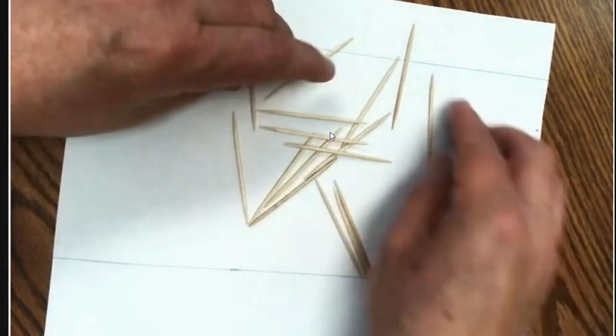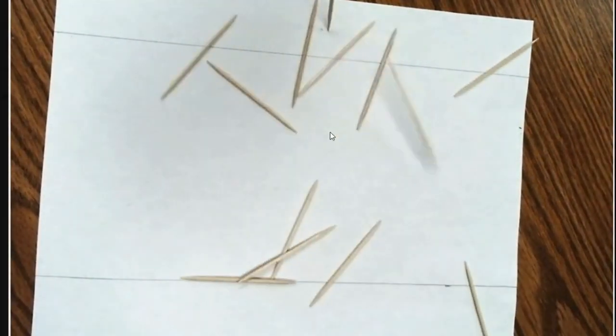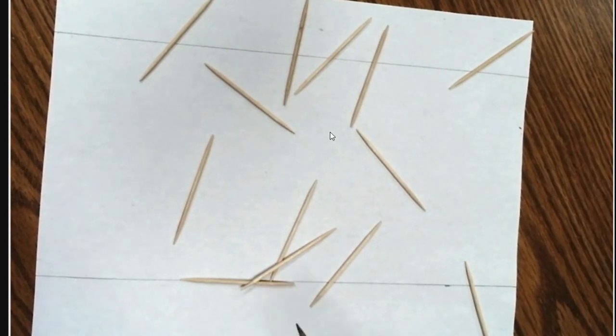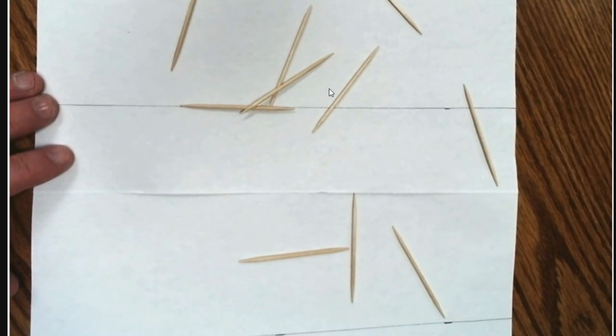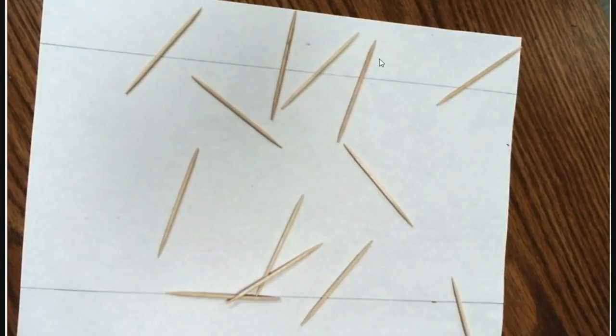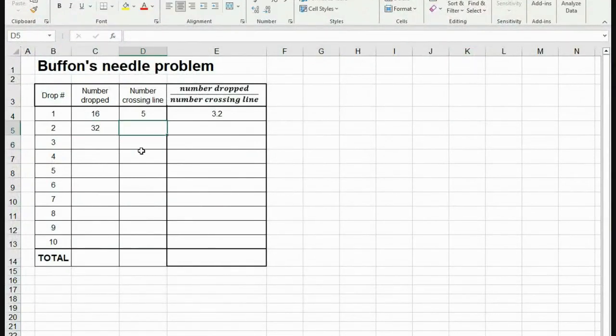Let me get my 16 toothpicks back. Again, if it goes off the paper, I'll just re-drop the ones that go off the paper. I want everything to stay on the paper. This is an interesting drop. I've got 1, 2, 3, 4, 5, 6, 7, 8, 9, 10. Some of them bounce to my other paper down here but they are not touching that line. It's real close right there, but not touching the line. So I've got 10 this time. So let me go back to my sheet. I dropped another 16, so I've got 32 that I've dropped. And now I have 15 that I've touched the line.